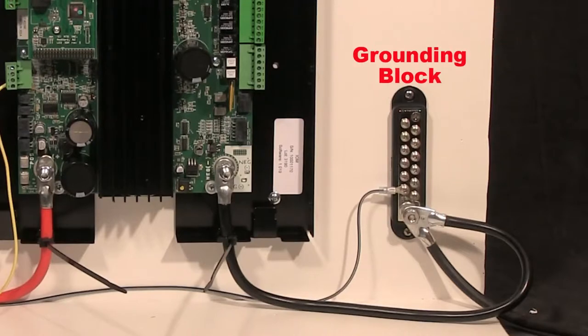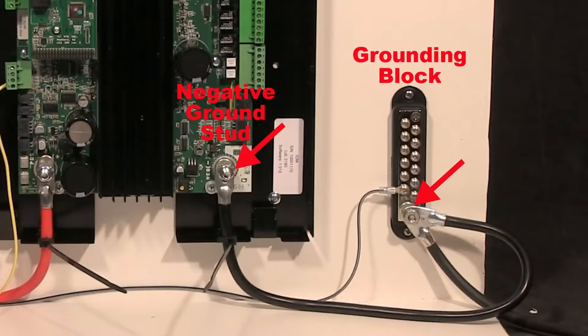Mount the optional grounding block close to the IOM and wire harness's ground wires. Run a cable from the grounding block to the vehicle's chassis ground. Run cable from the grounding block to the SmartTouch's IOM negative ground stud. Make note that cables are not included and the cable gauge and size should be equal to the battery's cable gauge and size that is connected to SmartTouch's IOM.